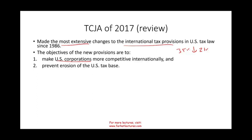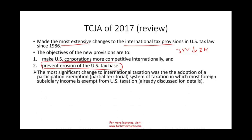Simply put, they don't want you to move overseas — they want to be able to tax you. And GILTI is going to try to work on this, to prevent the erosion of the U.S. tax base. The most significant change of the new law was the participation exemption or partial territory system, in which foreign subsidiaries are exempt from U.S. taxation, and we already discussed this in detail in the prior chapter.